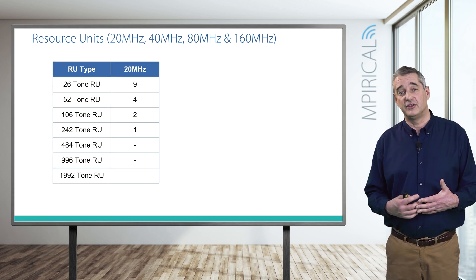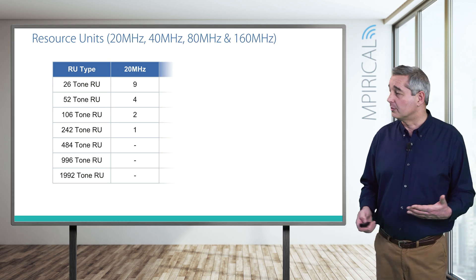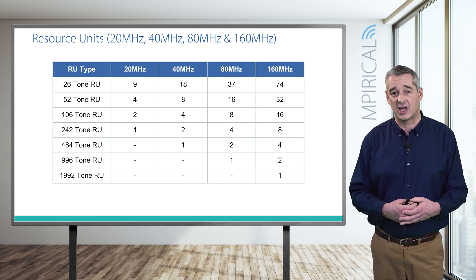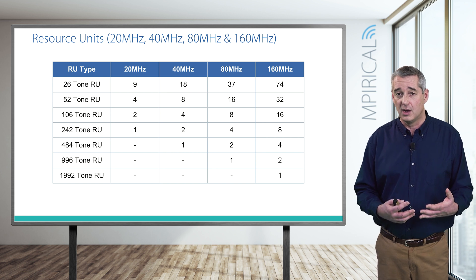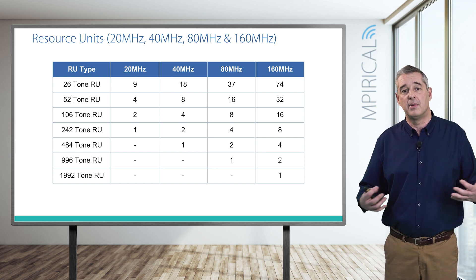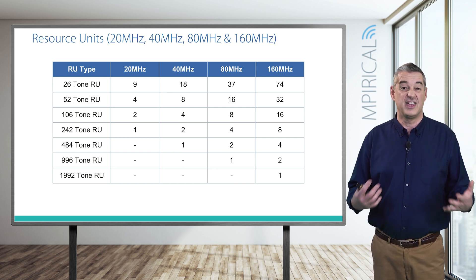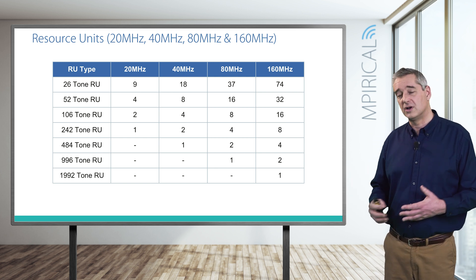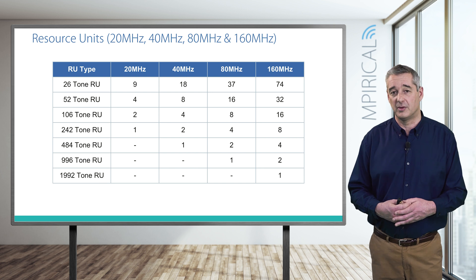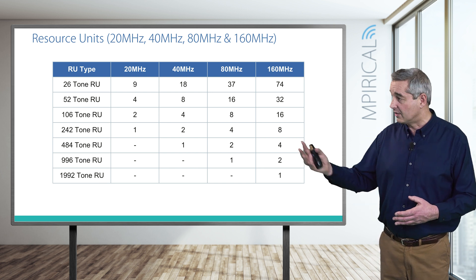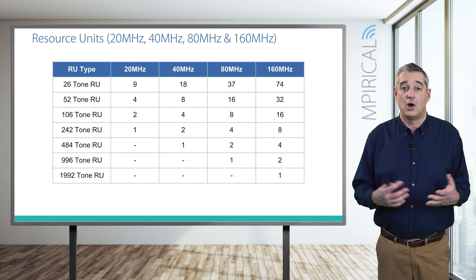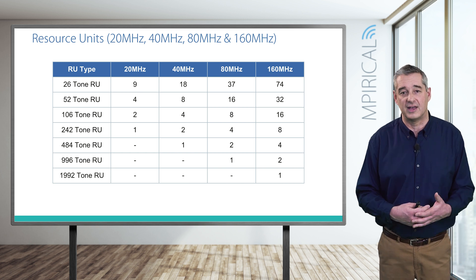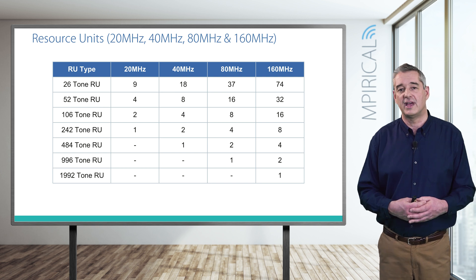As we've previously seen, Wi-Fi 6 can also support 40, 80, and 160 MHz wide channels, and correspondingly we can support a greater number of devices. Theoretically, in the case of 160 MHz we could support 74 separate stations simultaneously, giving each of them a 26-tone resource unit. Alternatively, we could allocate the entire resource to a single device to send more data.